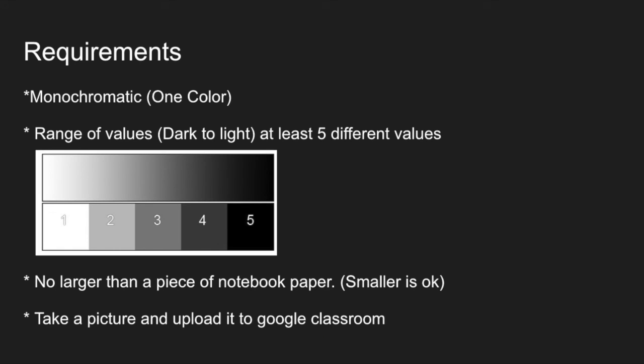Here are the requirements: monochromatic — one color. Has to be monochromatic, has to have a range of values from dark to light, so at least five different values. No bigger than a piece of notebook paper, but smaller is okay. Remember to take a picture and upload it to Google Classroom. I will see you guys next time — stay safe.